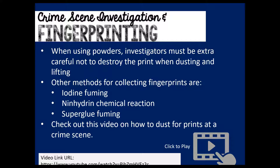In addition to powders, chemicals are used to make prints visible. One example is iodine fuming. Another is a chemical called ninhydrin — a powder that reacts with amino acids present in fingerprint residue, and is often converted to a liquid so it can be sprayed. Another example is superglue fuming. The main ingredient in superglue is a chemical called cyanoacrylate, which attracts to the amino acids, fatty acids, and proteins in a fingerprint. Because of this chemical reaction, it produces a clear fingerprint for investigators when conditions are right.